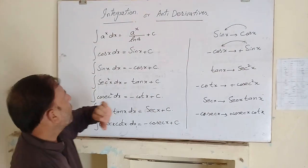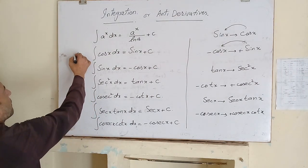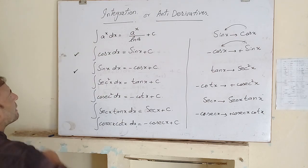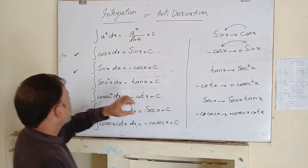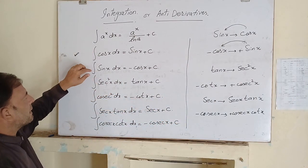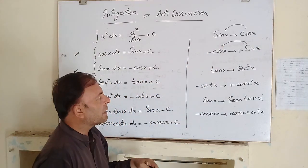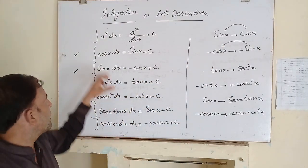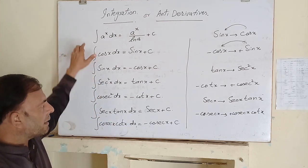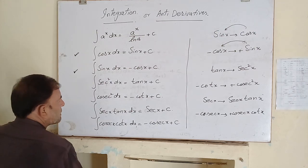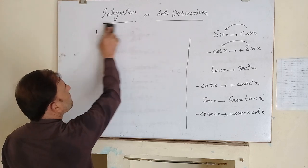We have six trigonometric functions: sin, cos, tan, cot, secant, and cosecant. We have discussed the integration of sin x and cos x, but we have six functions and we need to integrate all of them. Now we will discuss the integration of the remaining trigonometric functions.